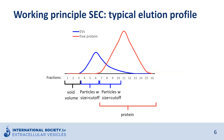After elution of the void volume, the next fractions will contain all particles that are larger than the cutoff size. And then finally, particles will elute that are smaller, such as proteins and smaller EVs. In this particular case, we end up with a large fraction of EVs that is relatively devoid of contaminating proteins — these are fractions 4 to 6. But we also have an overlap between the smaller EVs and the free protein, so fractions 7 to 10.